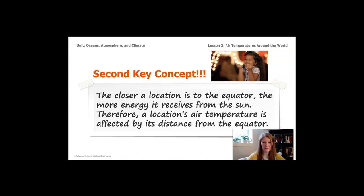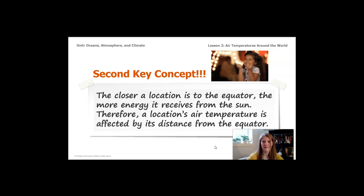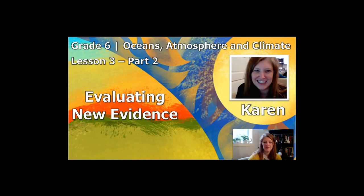This helps us understand that when thinking about how El Niño is affecting Christchurch, the distance that Christchurch is from the equator affects how much energy it's getting from the sun. This is the end of Lesson 3, Part 1. The next video will be Lesson 3, Part 2, where we're going to explore this a little bit more. This is Lesson 3, Part 2 for 6th Grade Oceans, Atmosphere, and Climate — in this part, we're going to be evaluating new evidence.